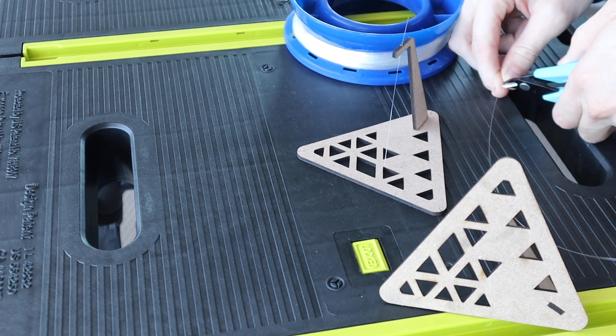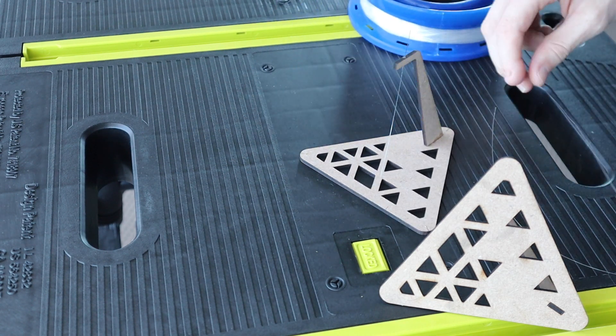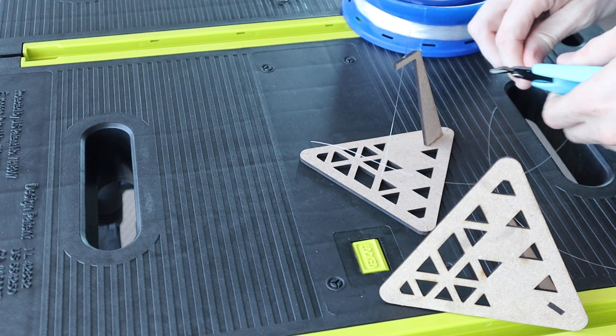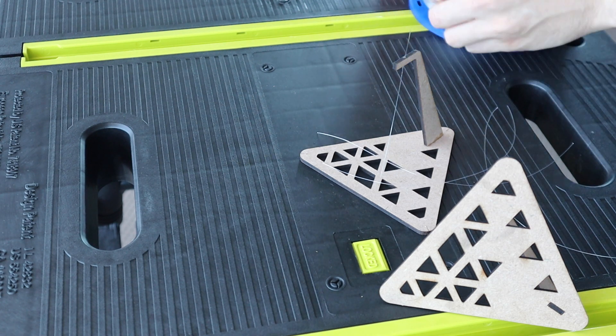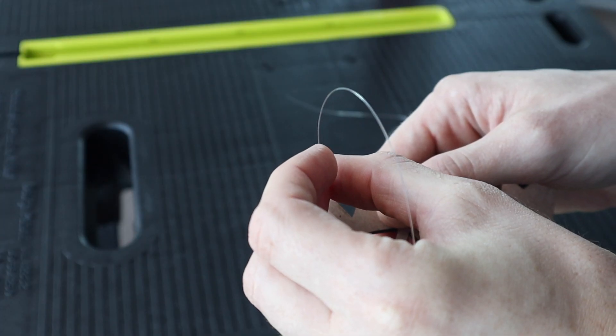Once that's done you can add your fishing line or thread. Fishing line is a bit easier to use because it doesn't fray and it's a bit more rigid, so it's easier to thread through the holes. Cut four lengths a lot longer than you need. You can then trim them once you're done.